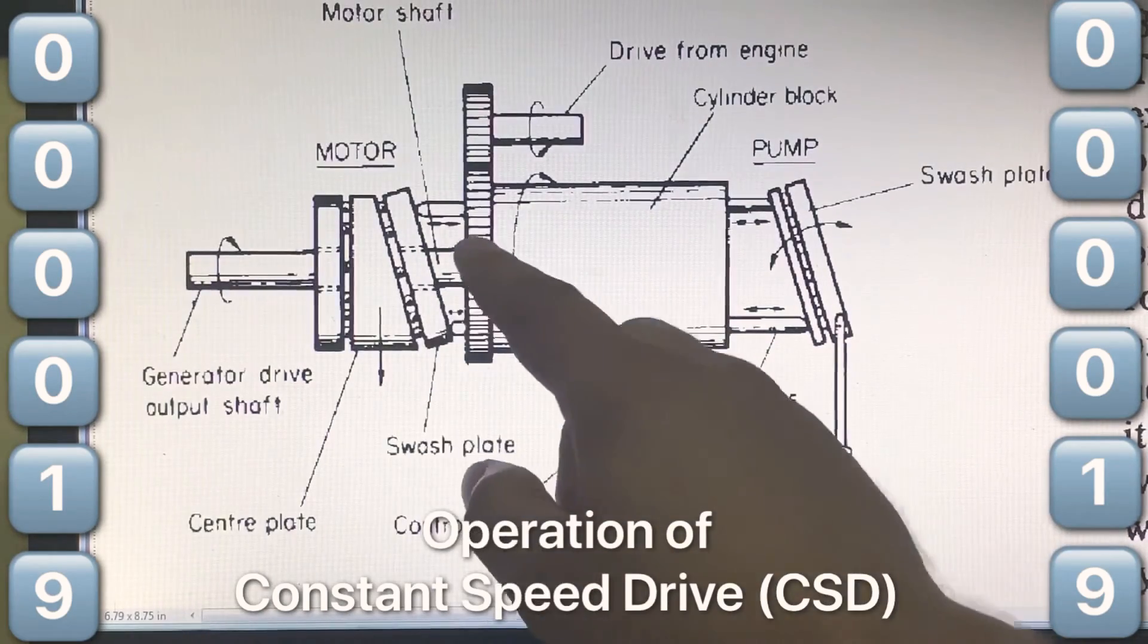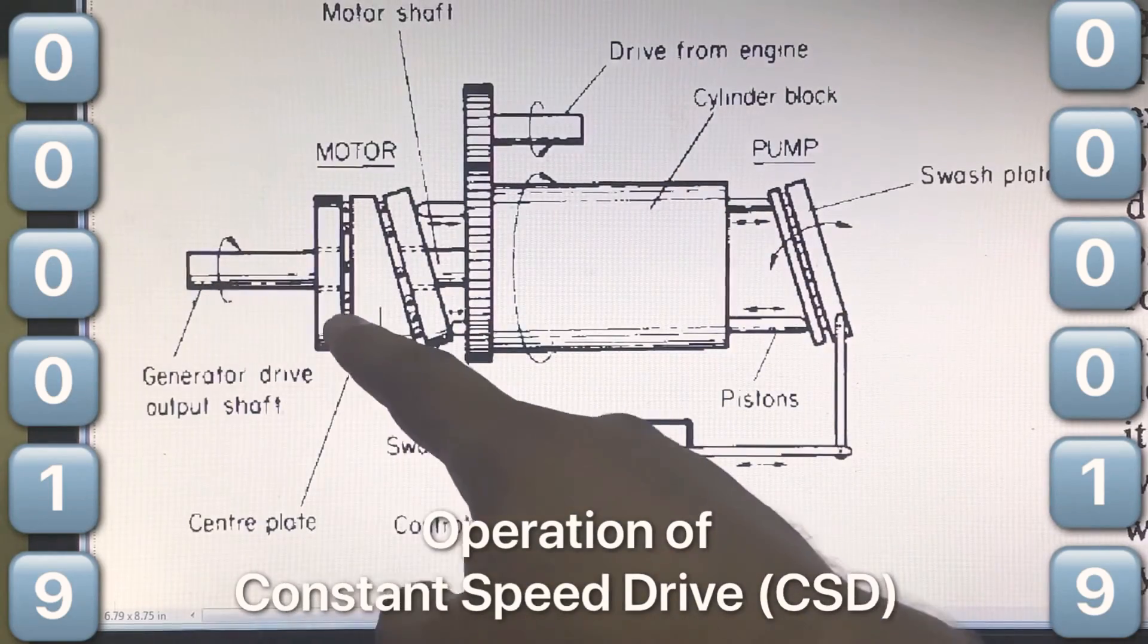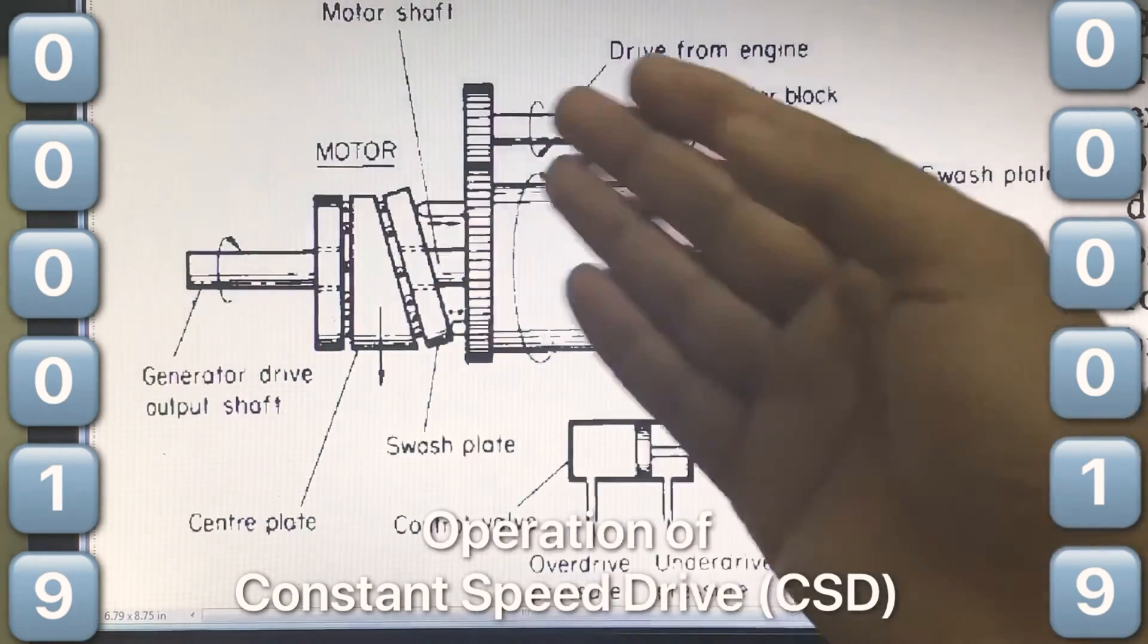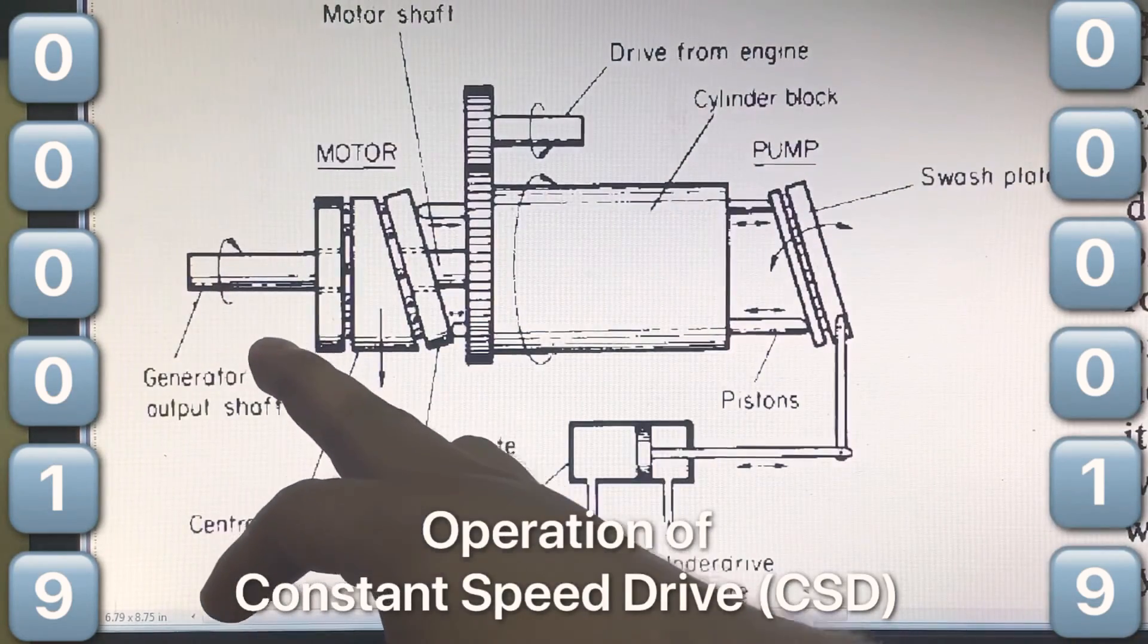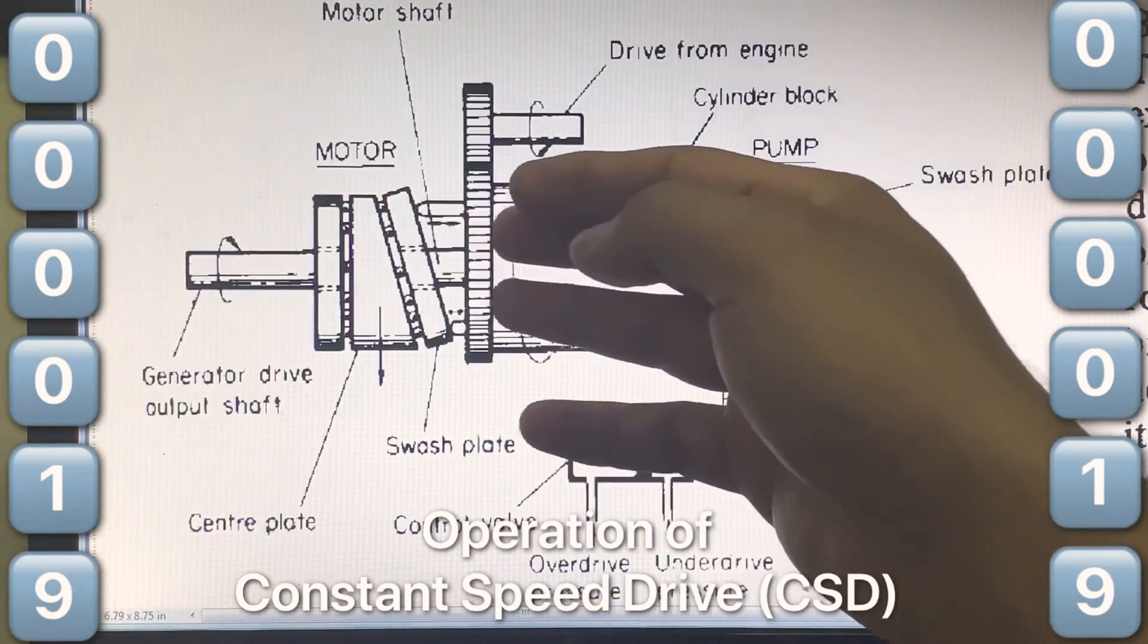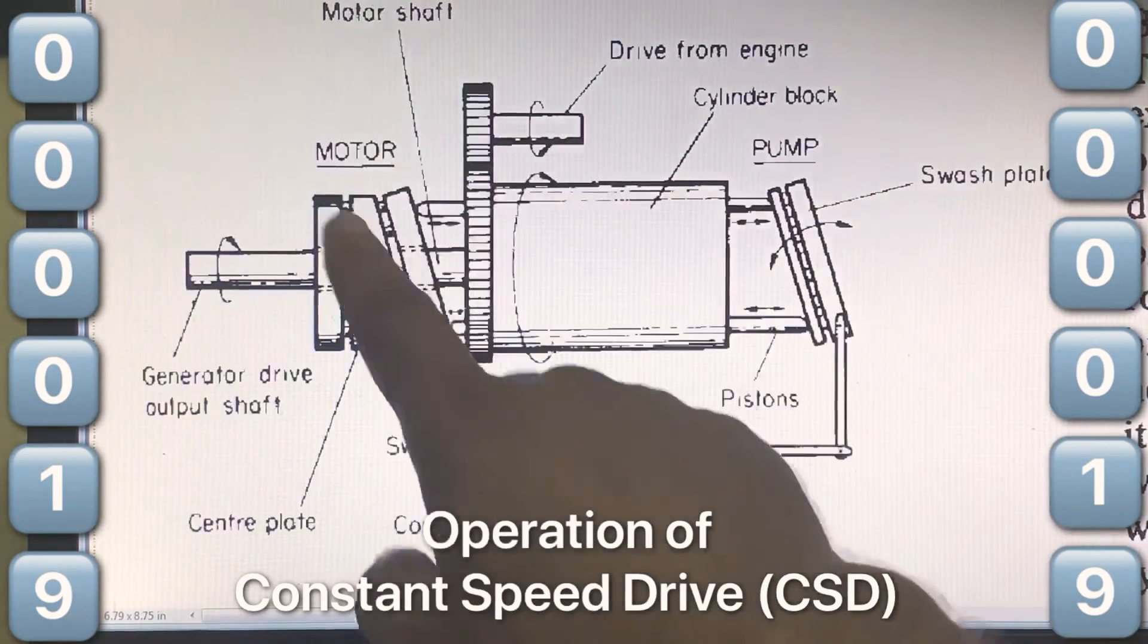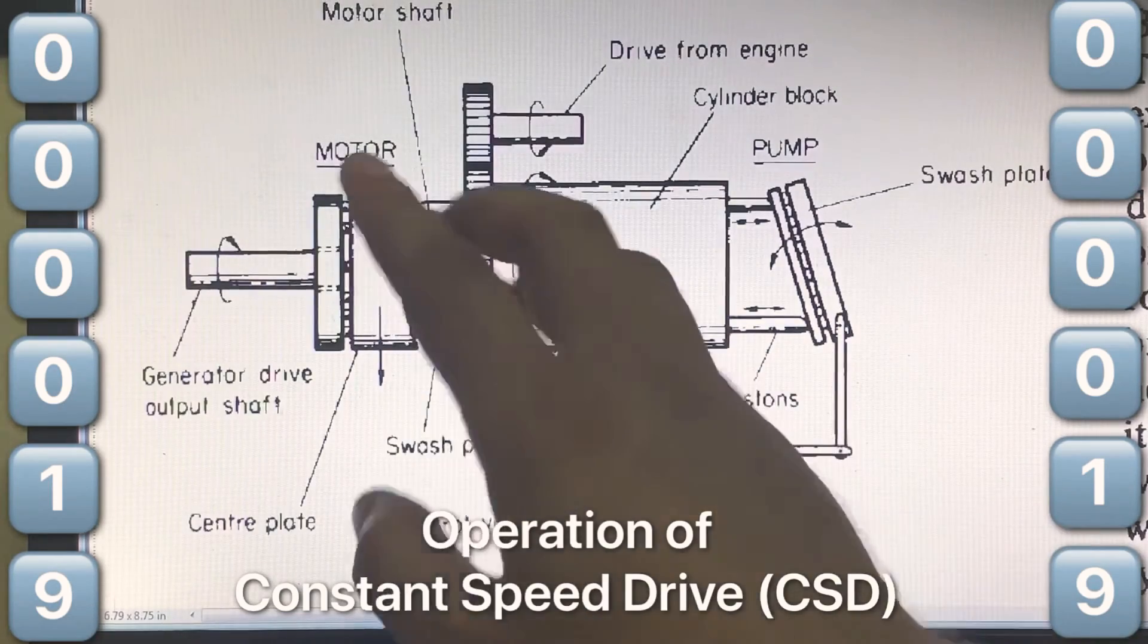Thereby overcoming the tendency for the engine to slow down the generator. In an underdrive condition, that means the engine drive is more than the required generator speed. In that situation, the pressure on this plate is decreased. Thus, the hydraulic motor exerts a lesser pressure so that it will rotate at a slower rate relative to the cylinder block.